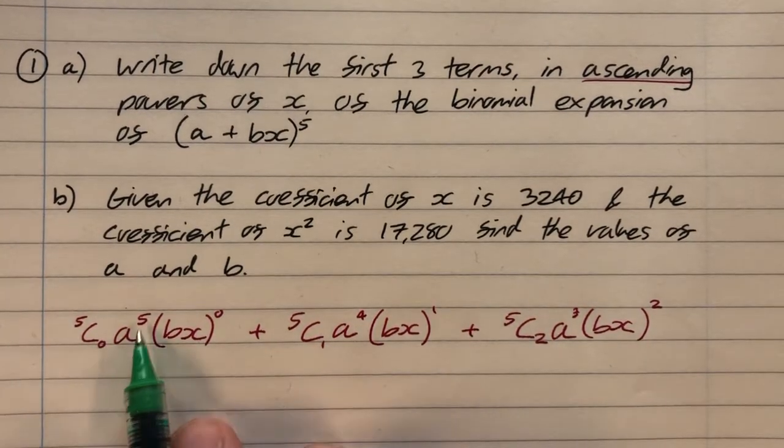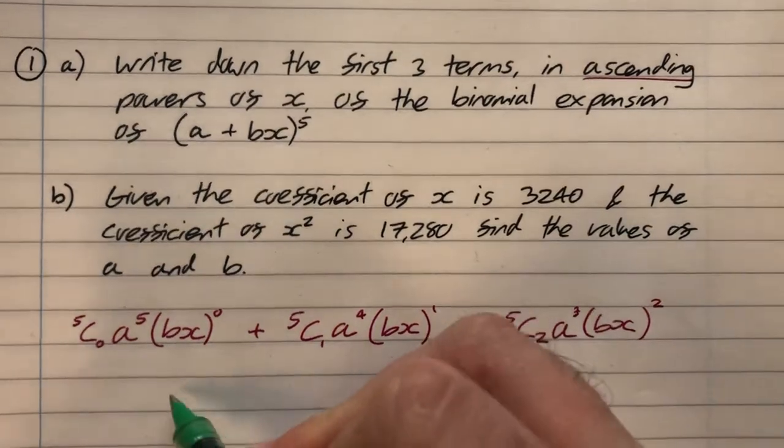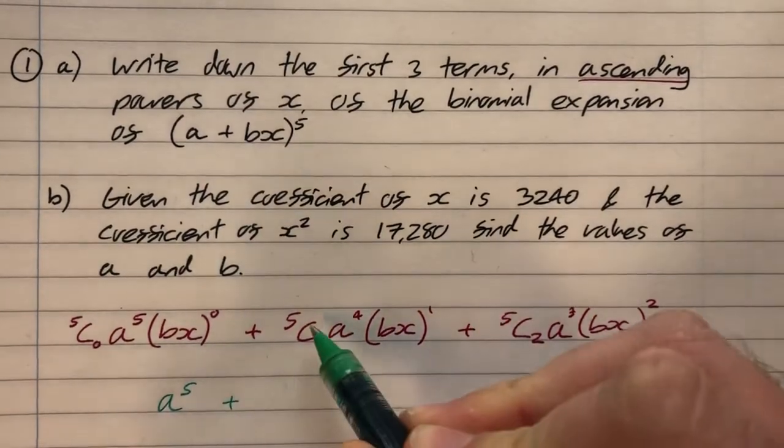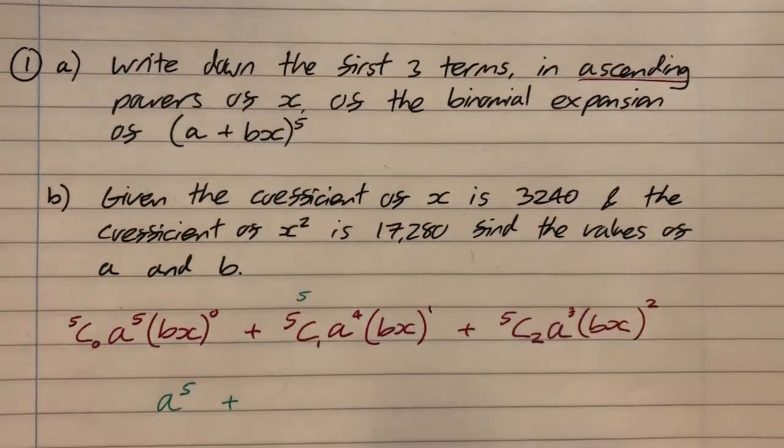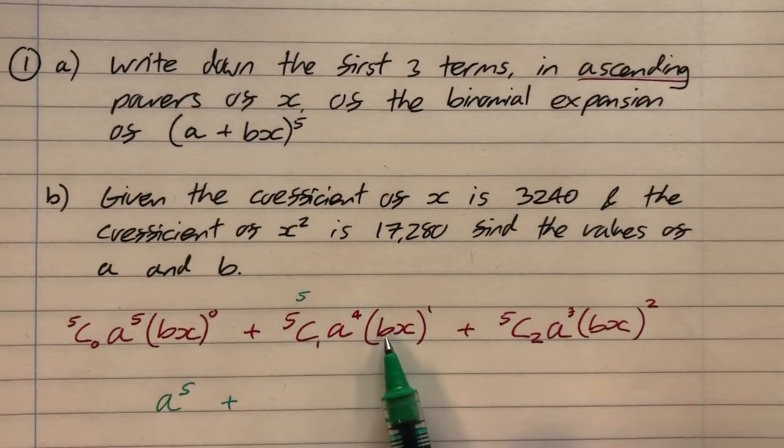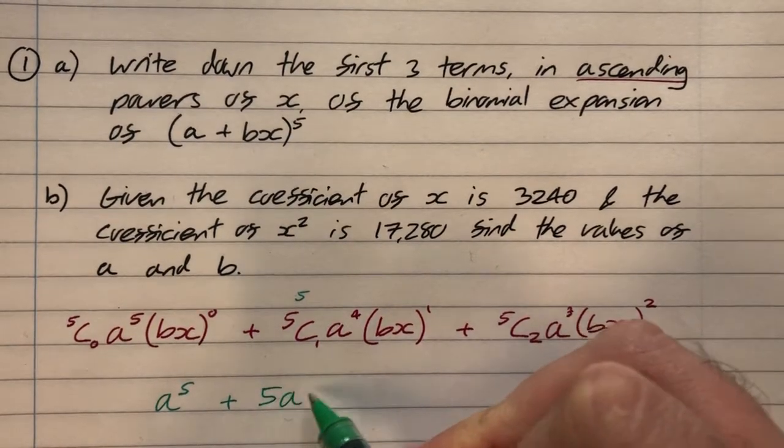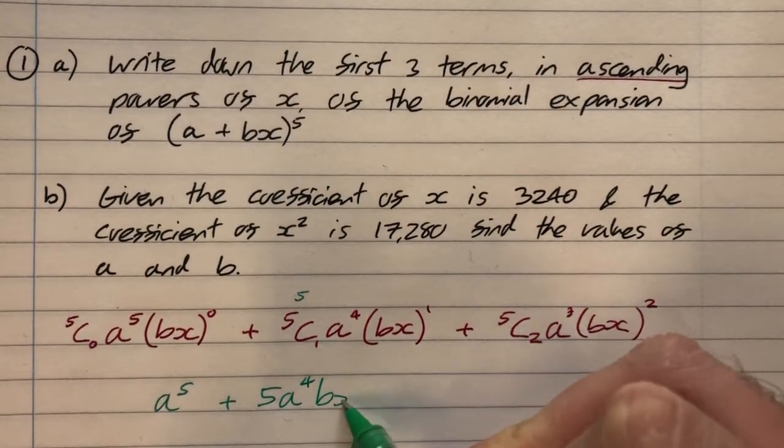You don't need to write 5C0 and bx to the 0 because they're just both one, but I'll put those in just so you can see the complete pattern. So that's the number one, that's a to the five, and that's the number one. So we have a to the five as our first term.